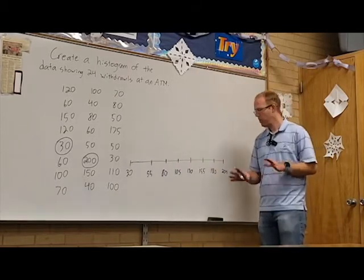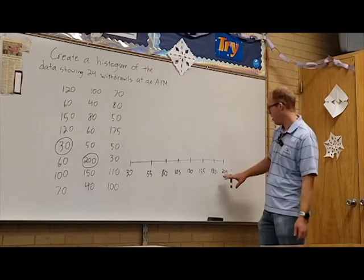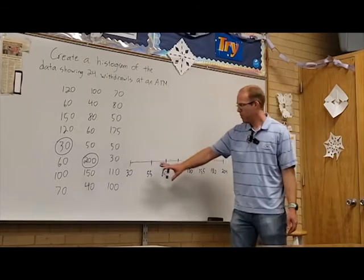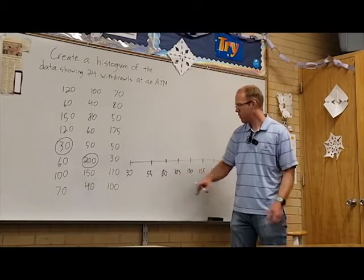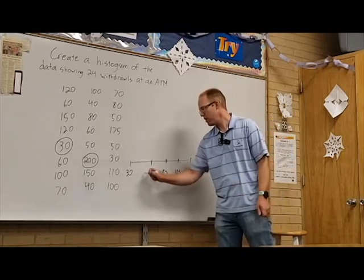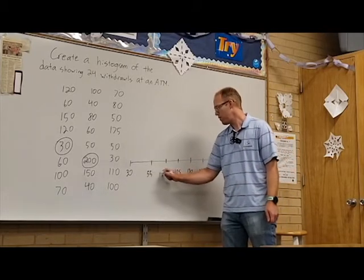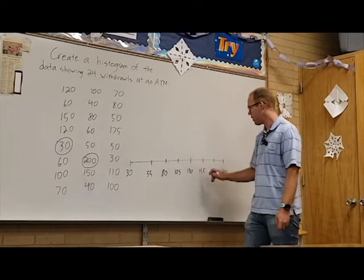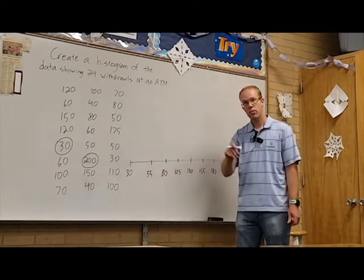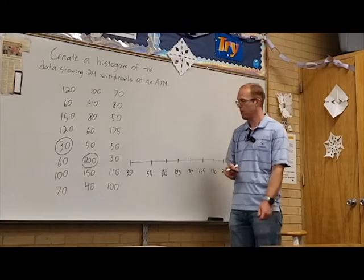I like that number, between 5 and 10 hits it about in the right spot. Important thing to consider, all of these intervals have to be the same size. From here to here, there's a difference of 25, 25, 25, 25, 25. That is an extremely important part of histograms.